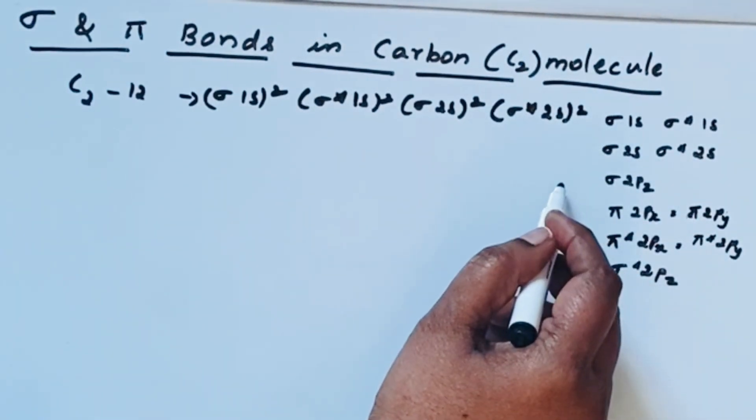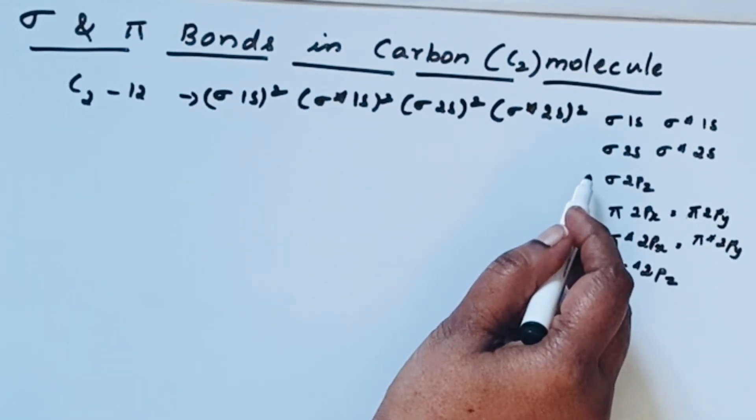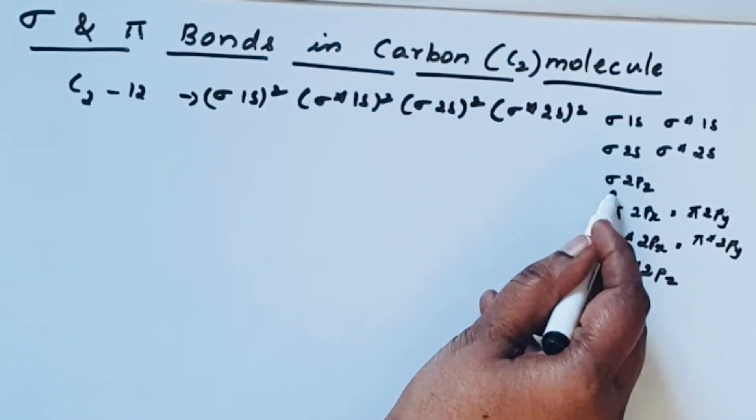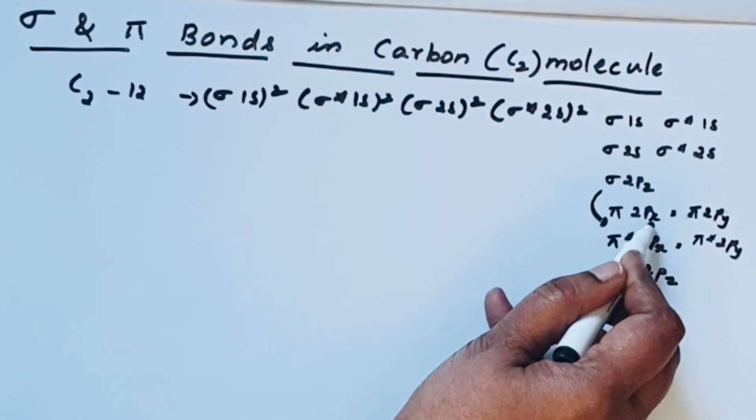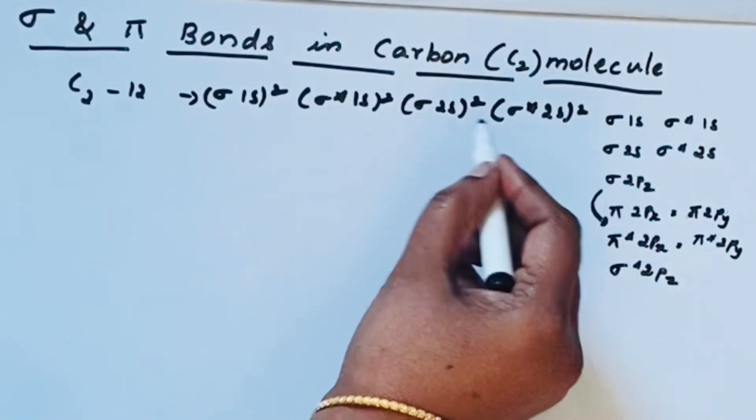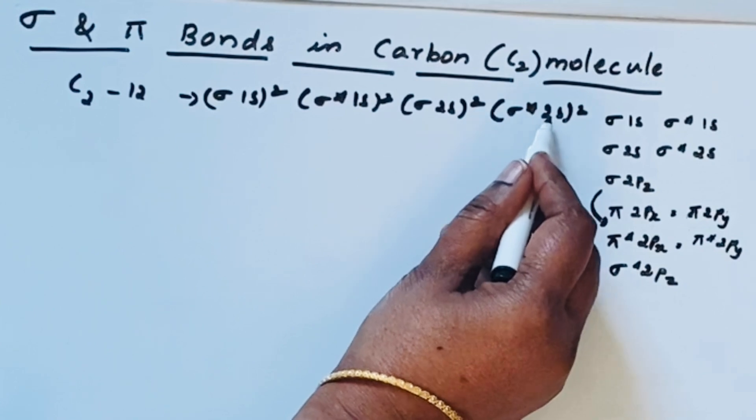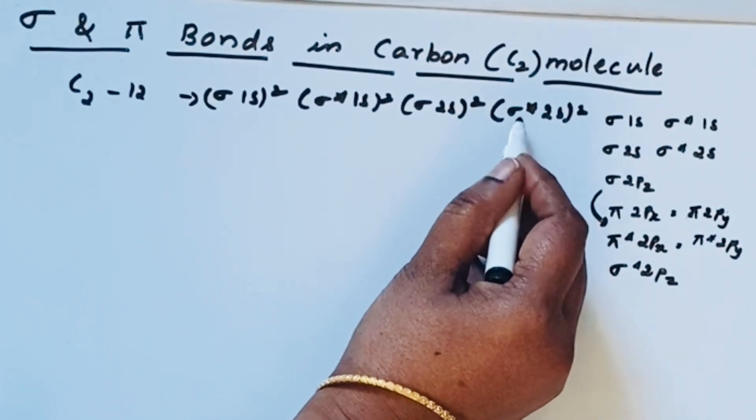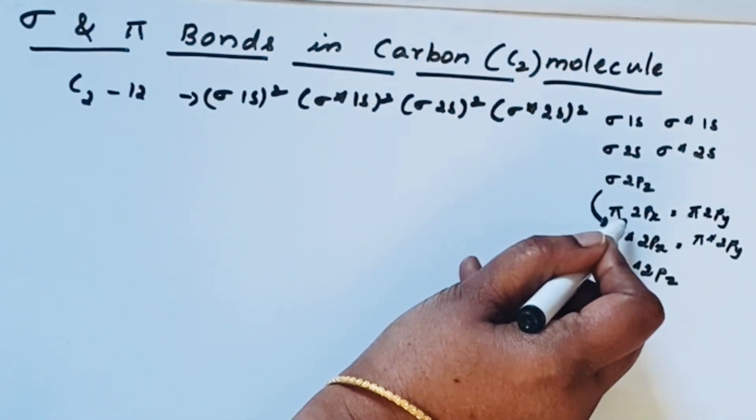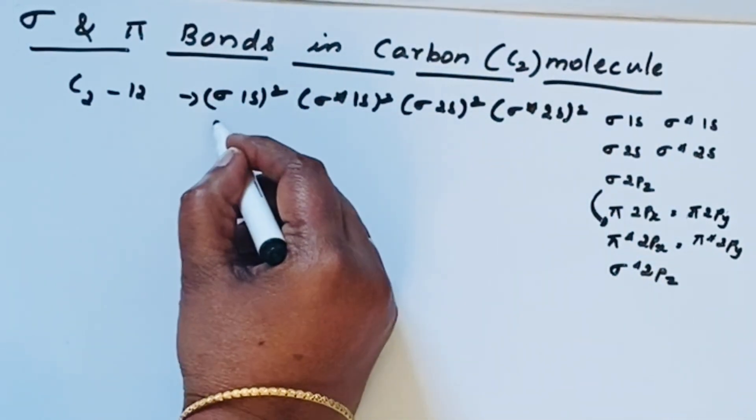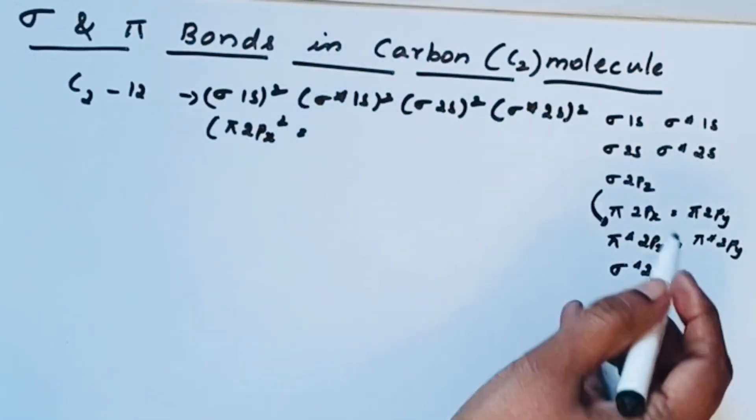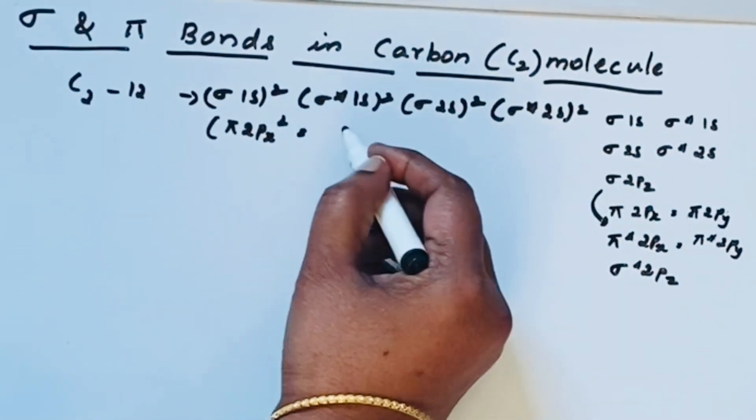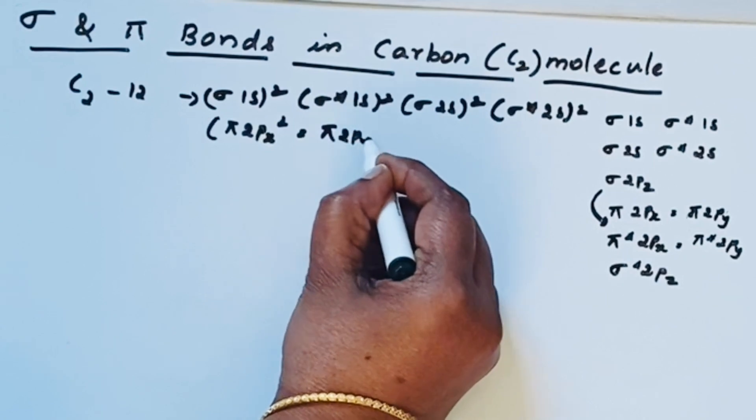In carbon, boron, and nitrogen there is a possibility of sp mixing. Because of that sp mixing, this sigma 2pz orbital gets more energy. So now the electron enters into pi 2px and pi 2py orbitals. After sigma star 2s2, the electron enters into pi 2px and pi 2py. So pi 2px2, the energy of 2px and 2py orbitals are the same, 2py2.